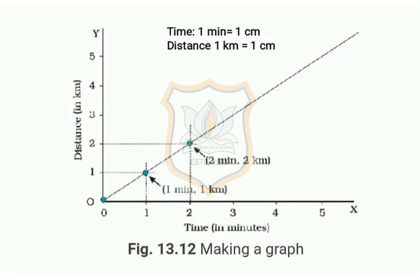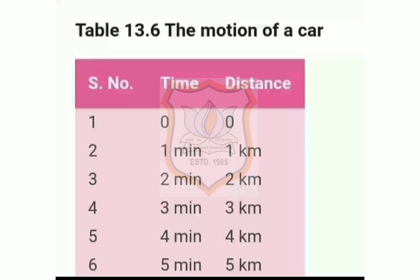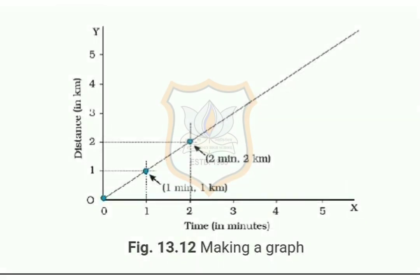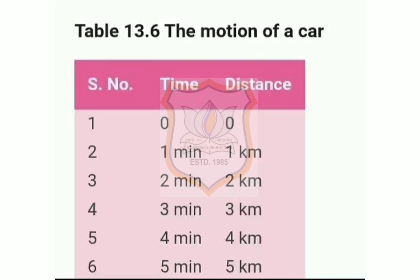Now mark the points on the graph paper to represent each set of values for distance and time. The observation at serial number 1 in table 13.6 shows that at time 0 minutes the distance moved is also 0, so the point corresponding to this set of values is the origin itself. After 1 minute, the car has moved a distance of 1 kilometer.